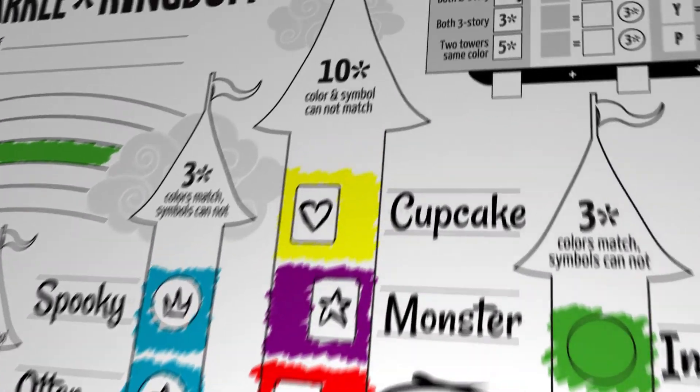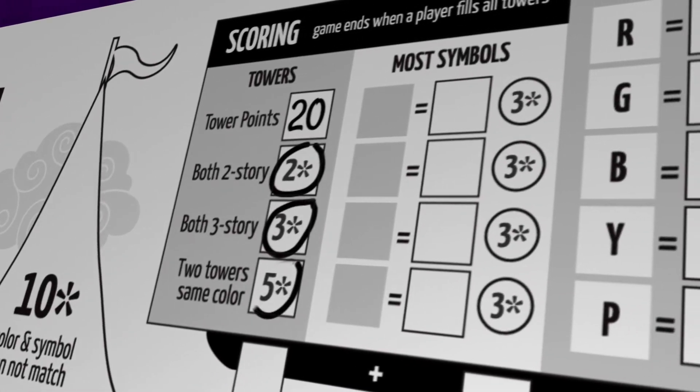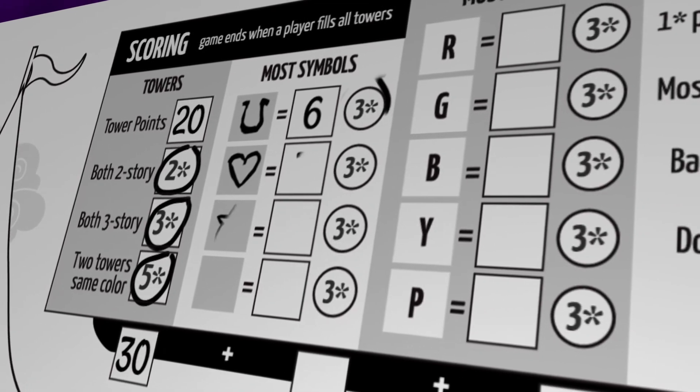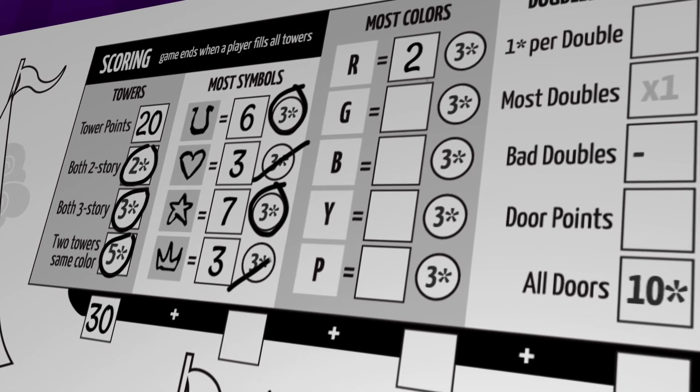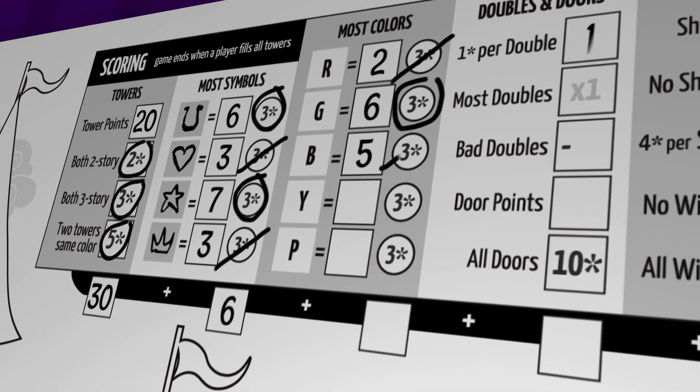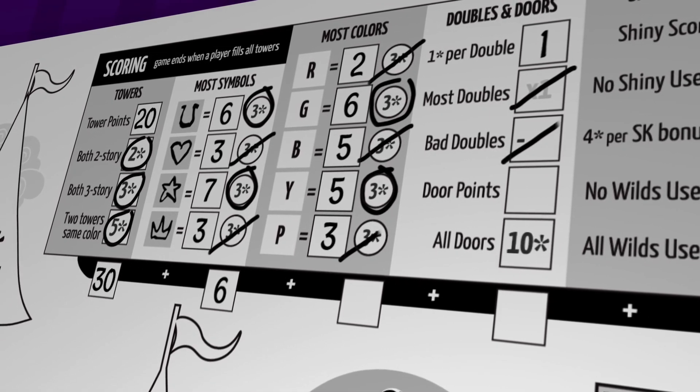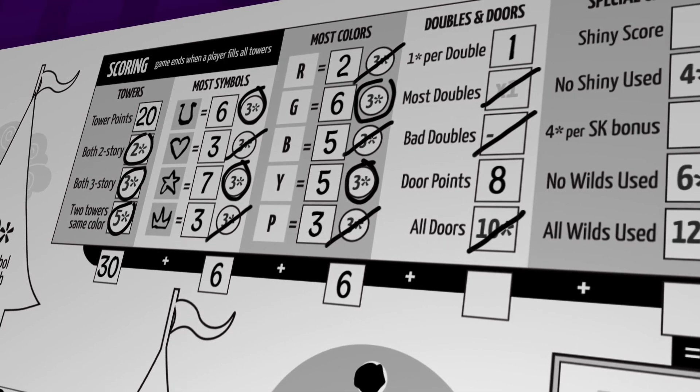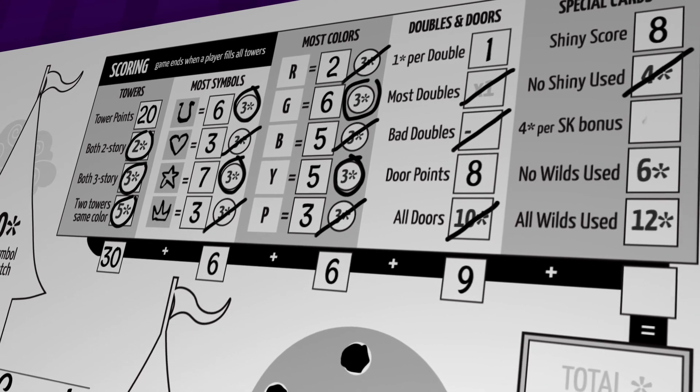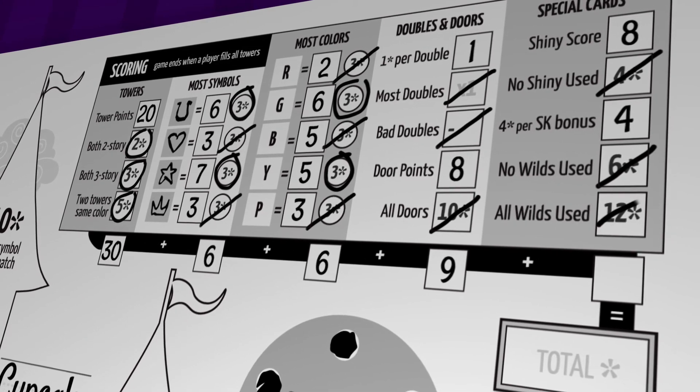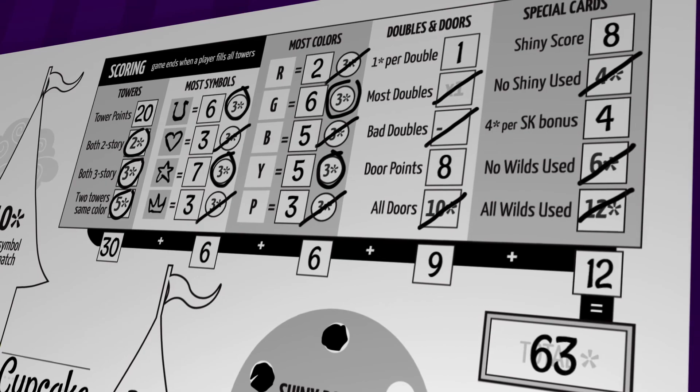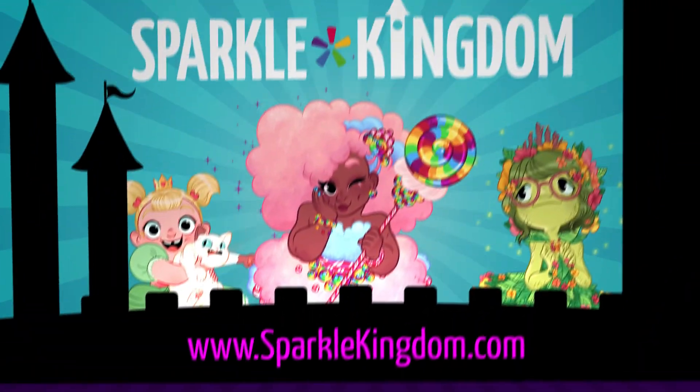Each player totals their scores by filling in the scorecard provided. Add up your completed towers and doors and mark off any bonus points you were unable to complete. Get the total number of each symbol, color, and circle double words and compare each one against all other players. The player with the highest total is crowned the most creative castle creator in all the kingdom!